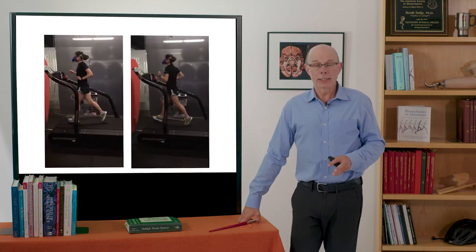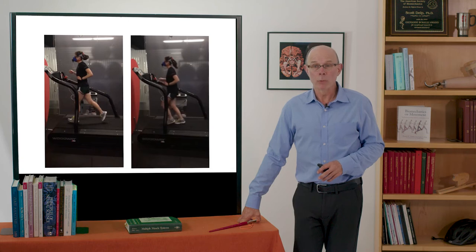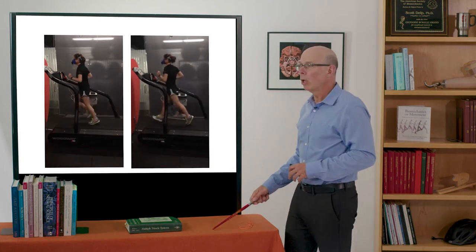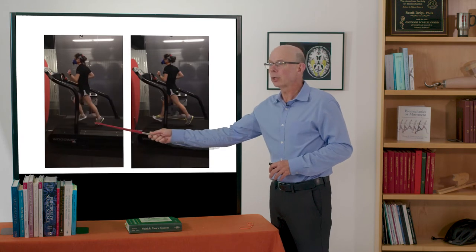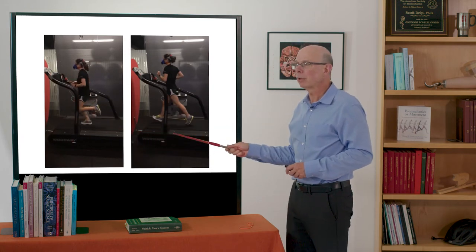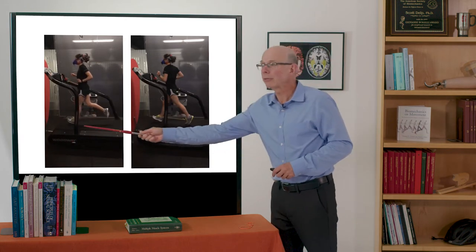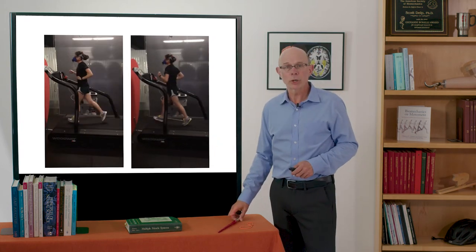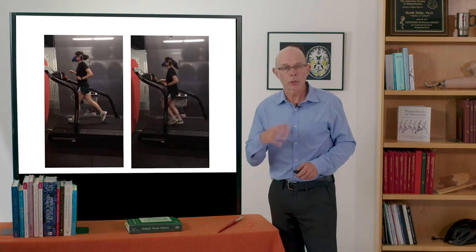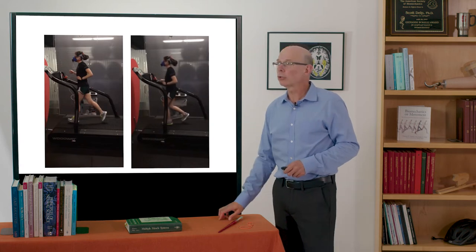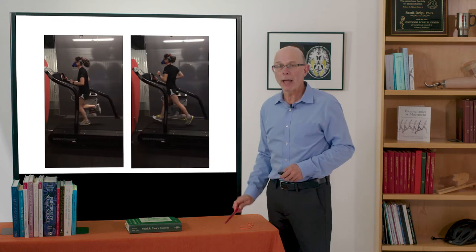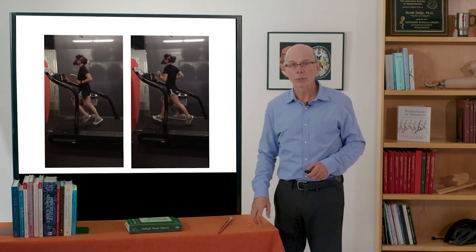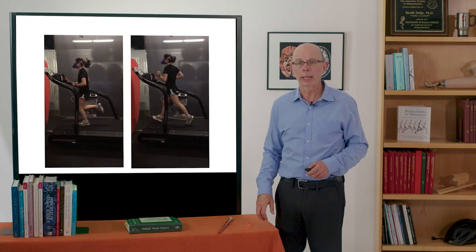So we tested this on a number of runners. Here's one of the excellent runners from Stanford's track team on the right running without the exotendon and running on the left. I'm sorry, running on the left without the exotendon and the right with the exotendon. And it changed her gait. She had shorter strides and we're also estimating her metabolic cost and what we found is once people learned to use the device they ran with less energy expenditure.